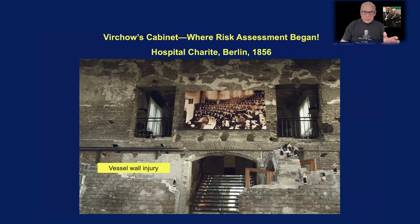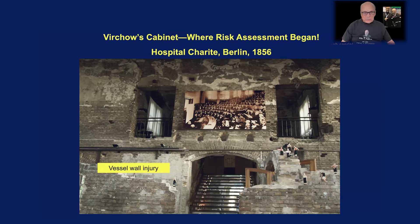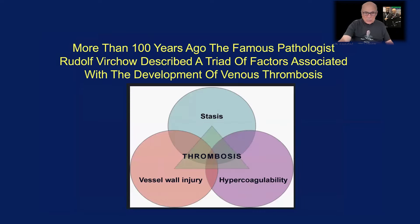The building has only partially been restored. The full picture in the inset shows Virchow's lecture hall as it was in those days. In 1856, Virchow postulated and showed evidence that the three factors associated with venous thrombosis were vessel wall injury, hypercoagulability, and venous stasis. He also showed that when one factor was present, there was a low likelihood of thrombosis; two factors present meant a higher incidence; but when all three were present, the incidence of thrombosis was thought to be very high.